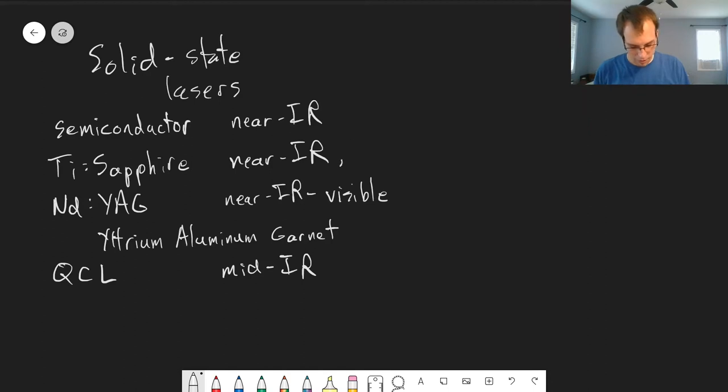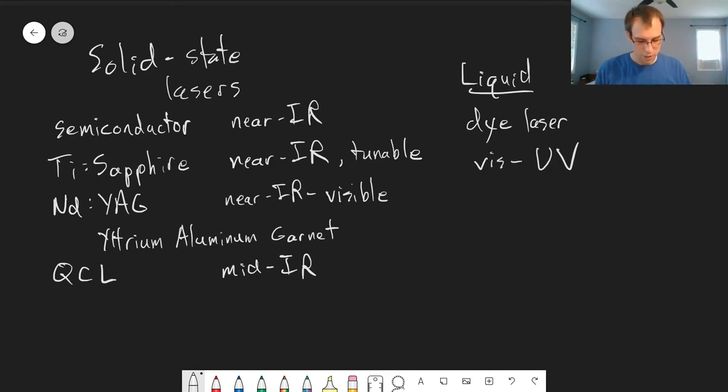Titanium sapphire is near-IR and also tunable. We also have liquid-based lasers. And there's essentially only one, though it's a very important one, is the dye laser. And what's useful with the dye laser is this can range all the way from visible to UV with different laser dyes that you can use.